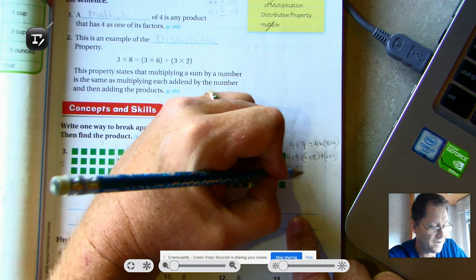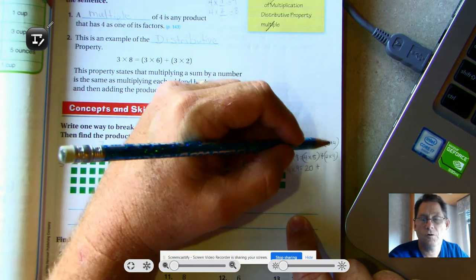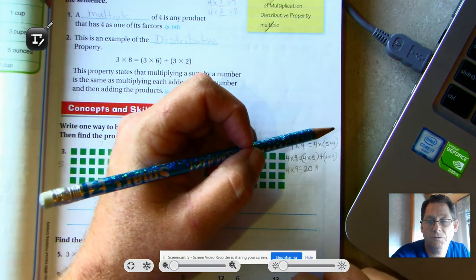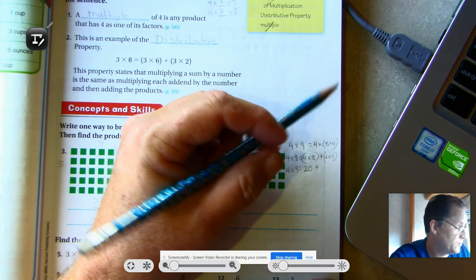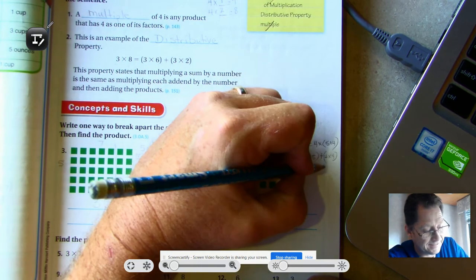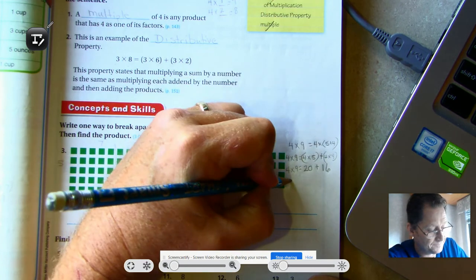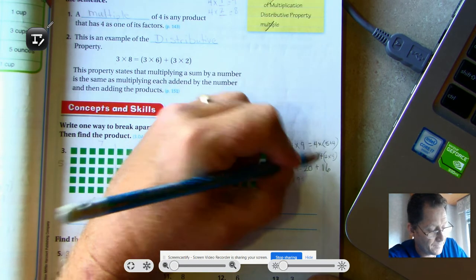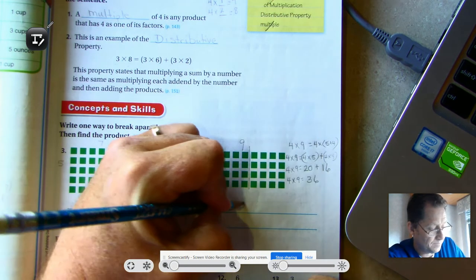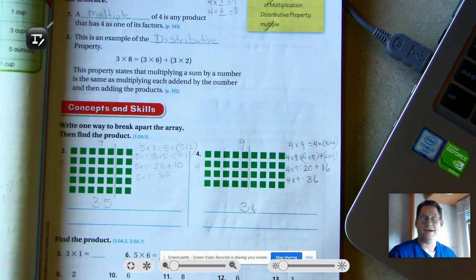Four sets of five is 20. Four sets of four is the same as four times two doubled. Four times two is eight. Eight and eight is 16. So four times nine is 36.